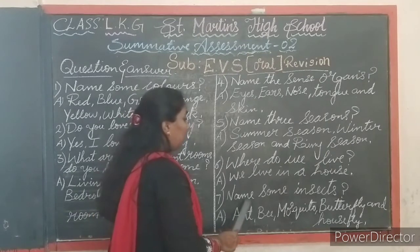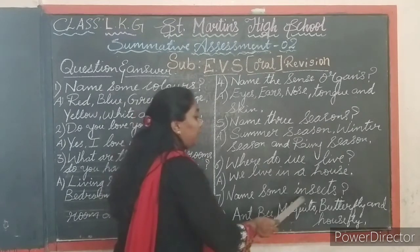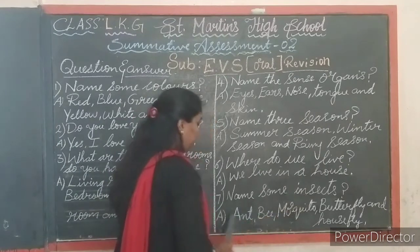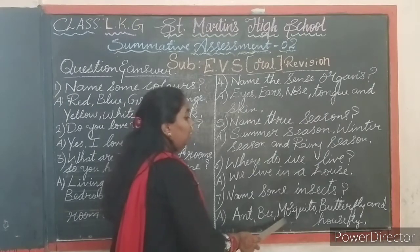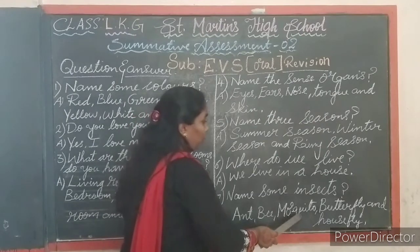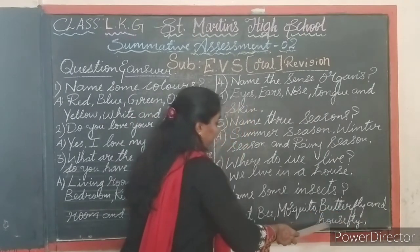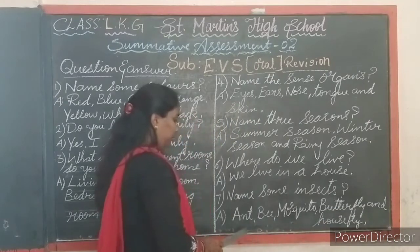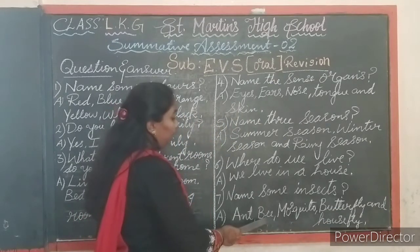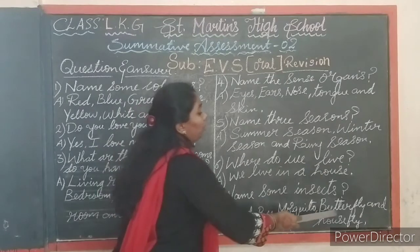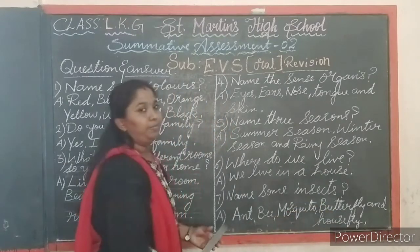Next question: name some insects. Answer — ant, bee, mosquito, butterfly and housefly. Tell me children — ant, bee, mosquito, butterfly and housefly.